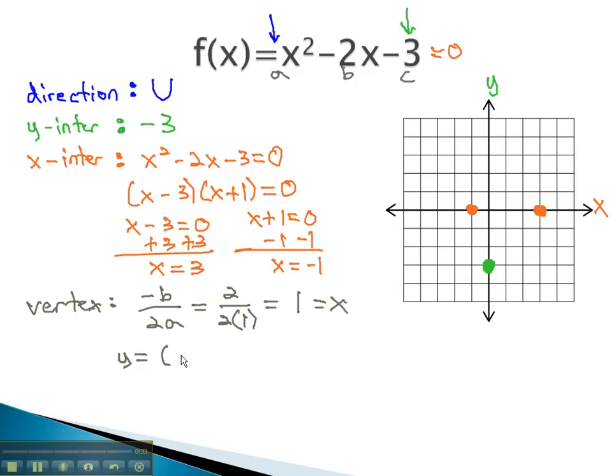To find our y, we plug 1 in, getting 1 squared, minus 2, times 1, minus 3, and evaluate to get y equals 1, minus 2, minus 3, or y equals negative 4. The vertex, then, is at an x-y point, 1, comma, negative 4.